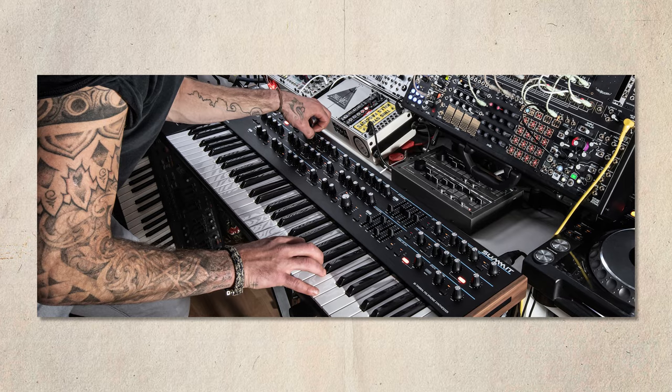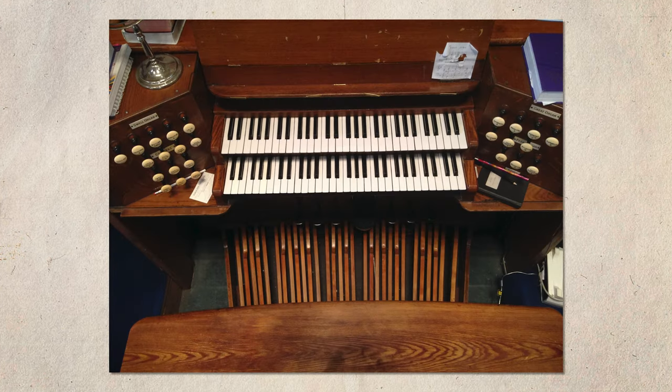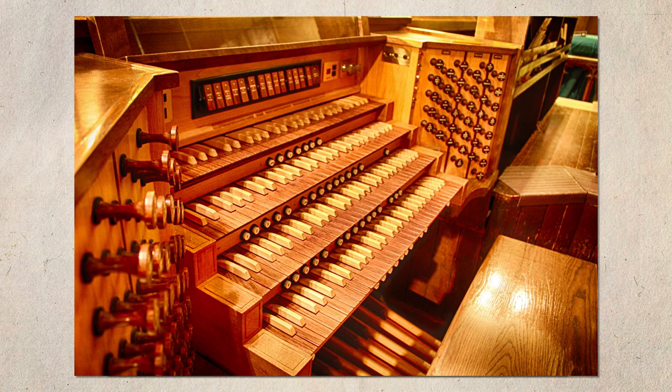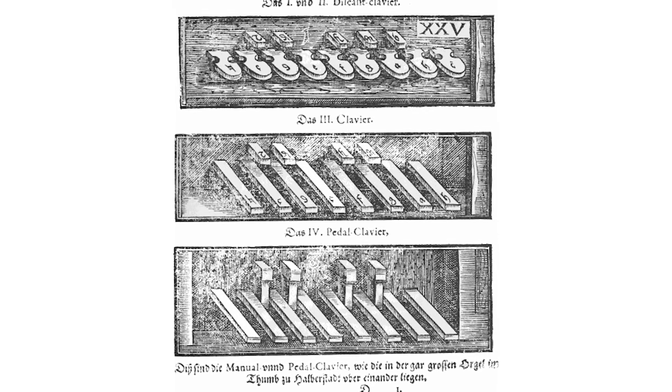The most common form of keyboard in musical instruments is what's called the 7 plus 5 layout. You'll see them on pianos, synths, accordions, keytars, even the foot pedals of an organ and the top of the organ — they're all the 7 plus 5 layout. The first iteration of the musical keyboard was made all the way back in 1361 and it looked a little bit different than the keyboards we know today.